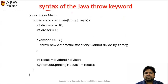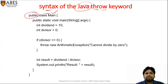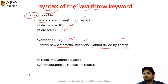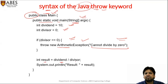Now you can see the program with the throw syntax. The class name is 'Main', public static void main with arguments. int dividend is equal to zero, int divisor is equal to zero. If divisor equals zero, then throw new ArithmeticException — 'cannot be divided by zero.' Otherwise, result equals dividend divided by divisor, and system.out.println result.